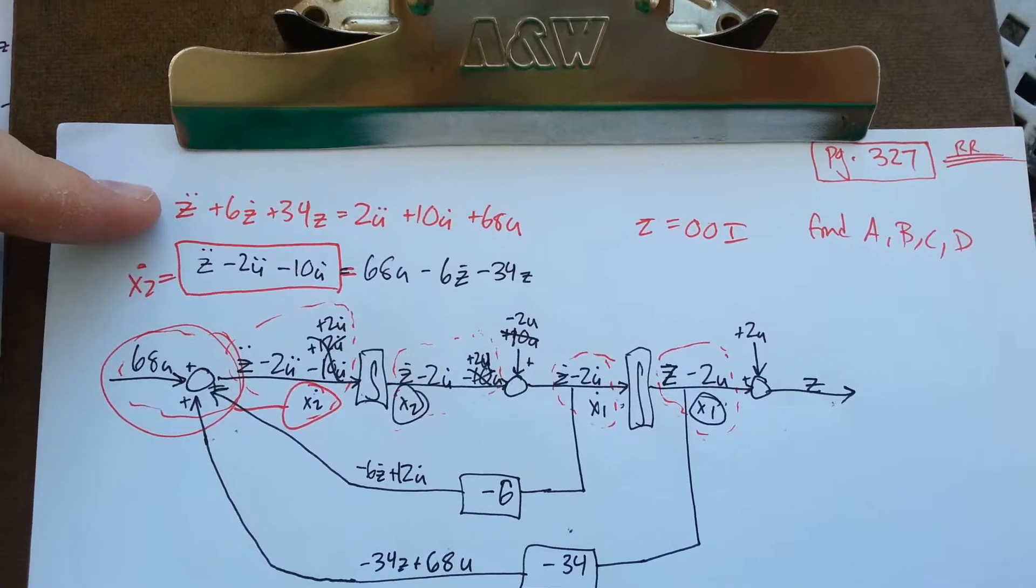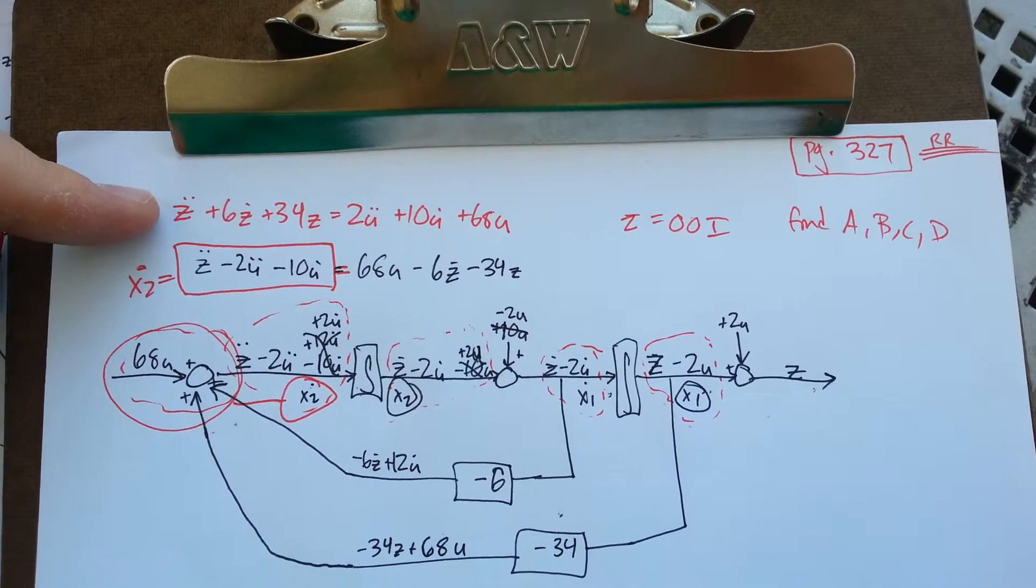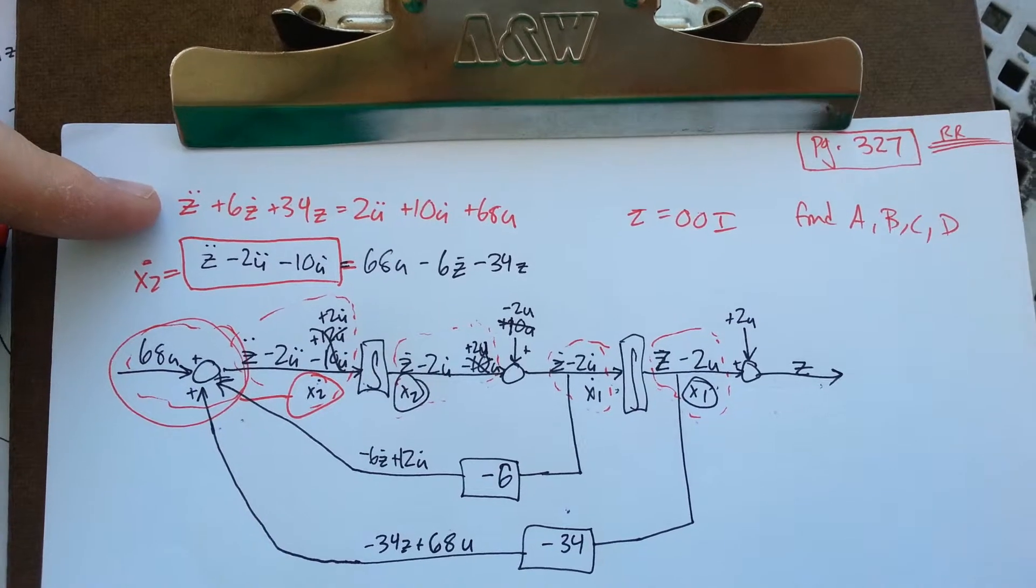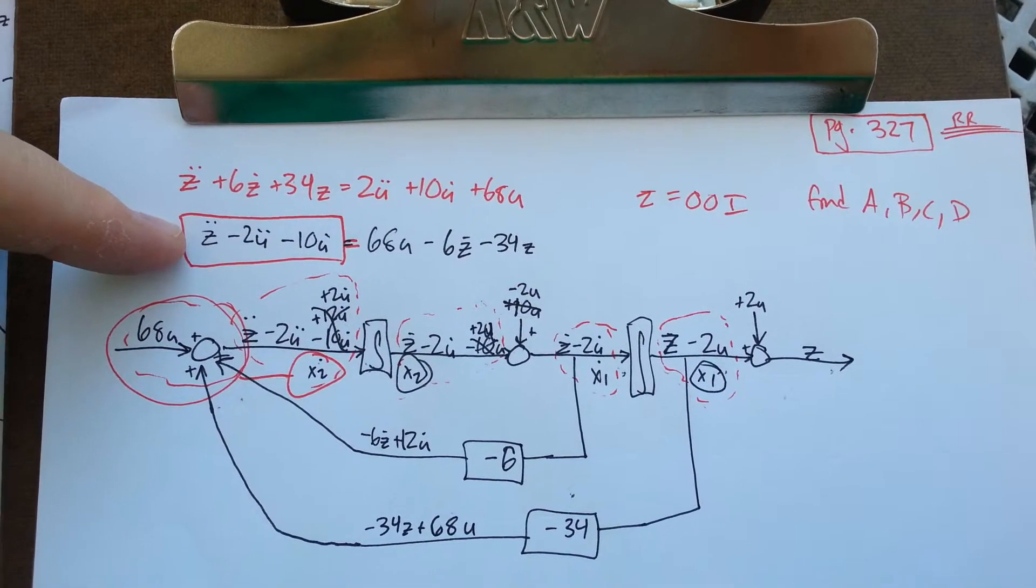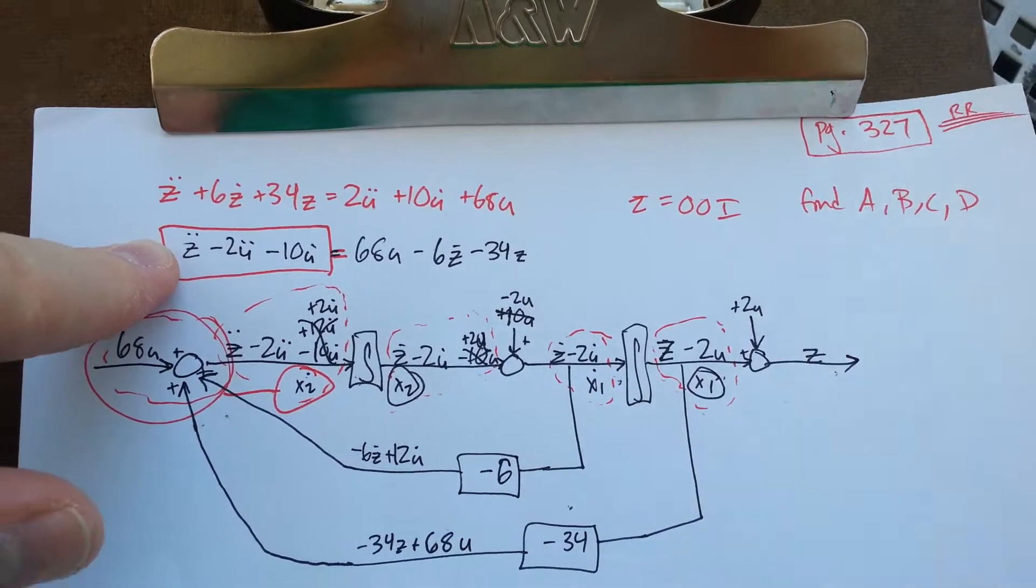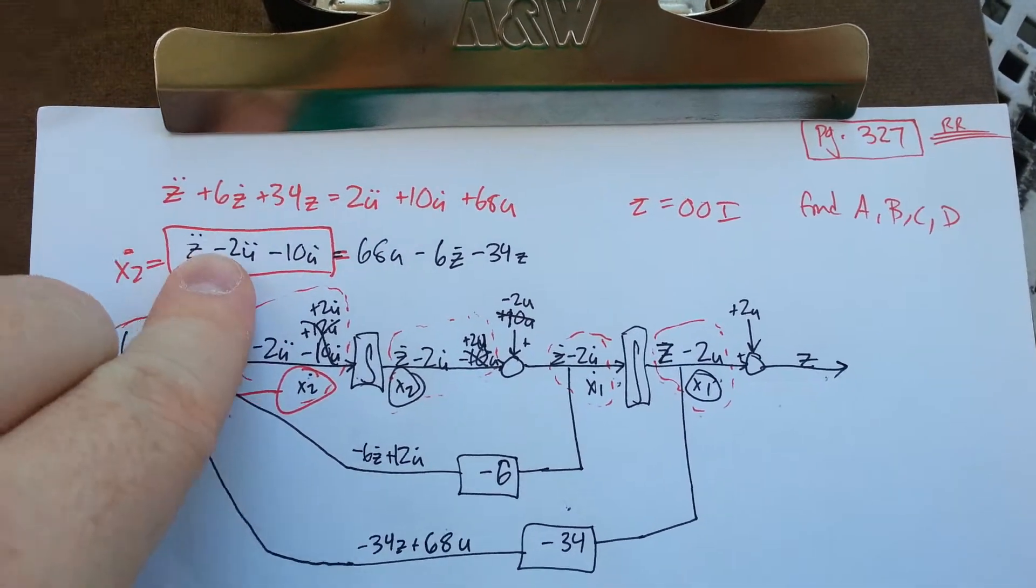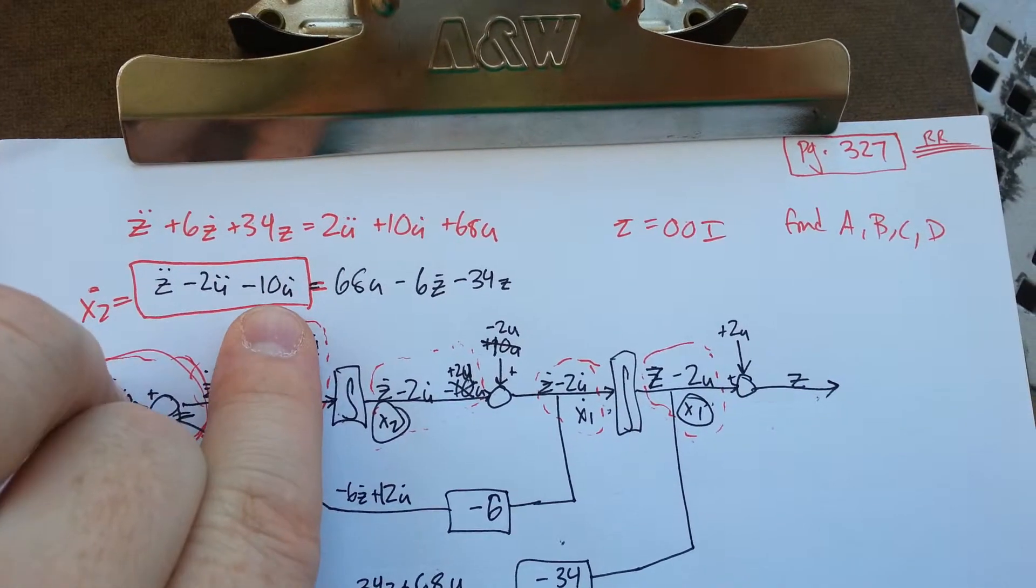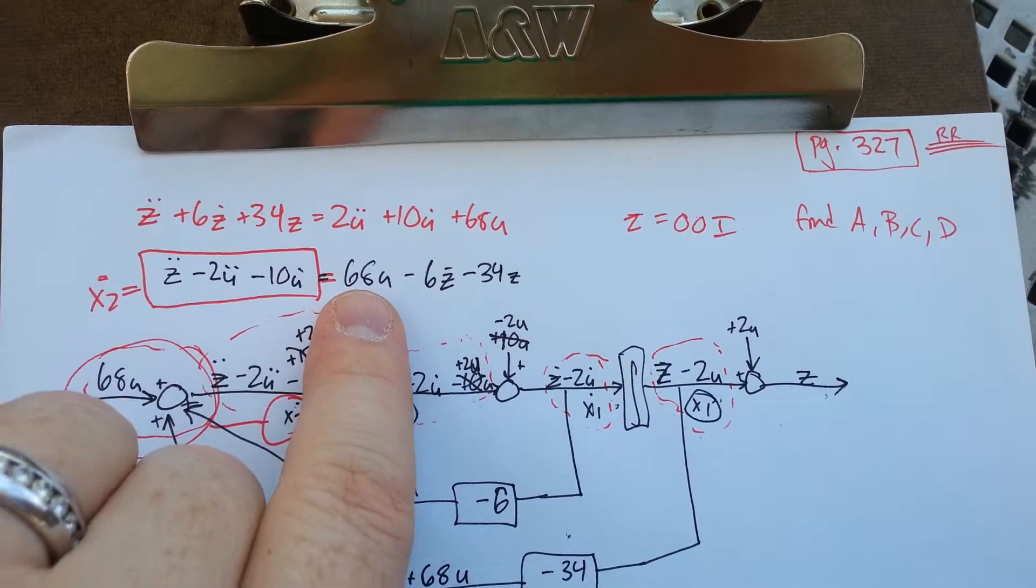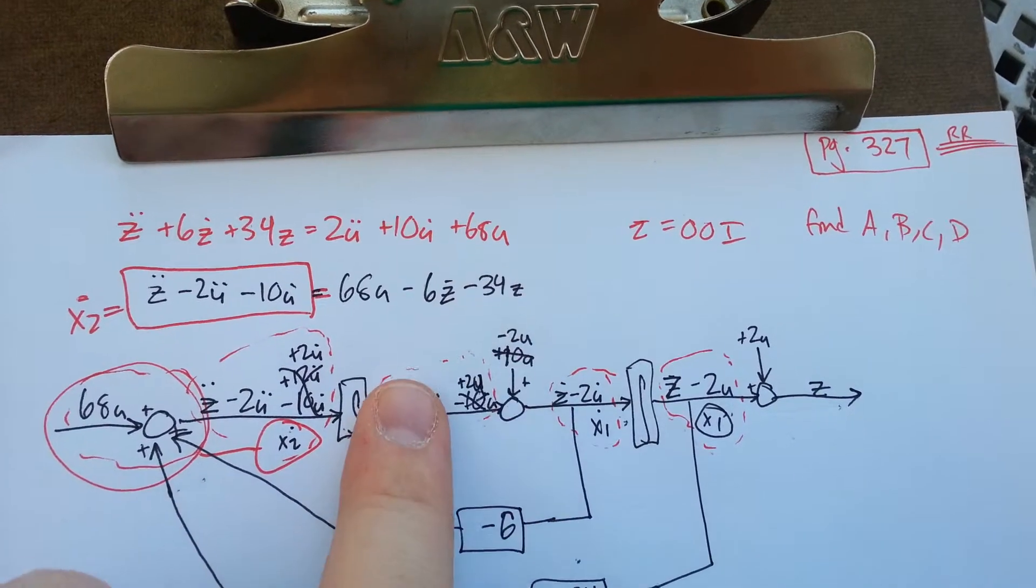In this differential equation where the output of interest is z, we take the differential equation and put all of the highest order z on the left. We bring all the input derivatives, which in this case is u double dot and u dot, to the left side of the equation and put the remaining items on the right side of the equal sign.